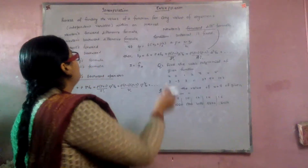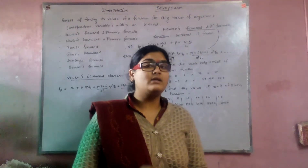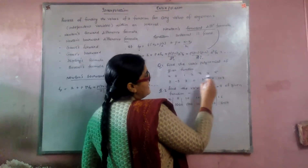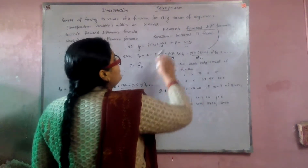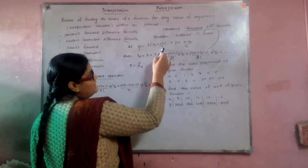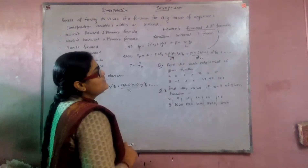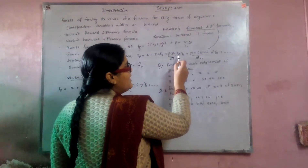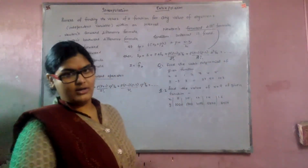Let us start with Newton's forward difference formula. To apply Newton's forward difference operator, the interval between the arguments must be the same. If the interval is h, then any function at any value can be written in the form: f naught plus p times the forward operator of f naught, plus p(p−1)/2! times the second-order forward operator, plus p(p−1)(p−2)/3! times the third-order operator, and so on.